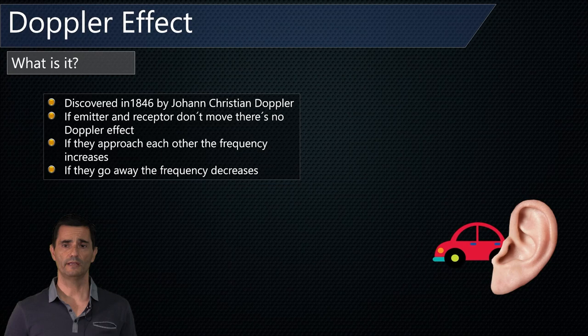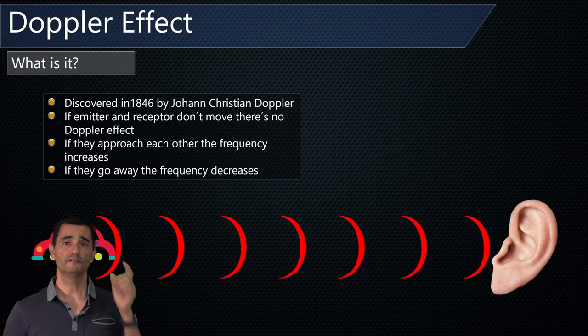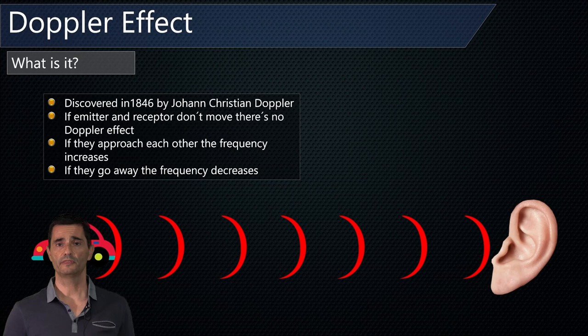Third case: we have the emitter emitting at the same frequency, but now it's moving away from the receptor. So it's always emitting at the same frequency, but the frequency the receptor receives is lower — the frequency decreases. So when they approach, the frequency increases; when they go away, the frequency decreases. This is the Doppler effect.